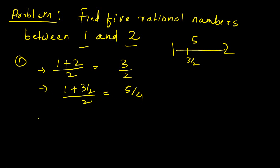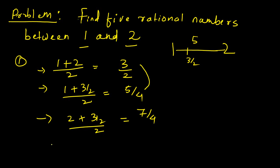The third one: simply add these two numbers. So, (2 + 3/2) divided by 2, which is 7/4. Then, (3/2 + 5/4) divided by 2, which is 11/8.